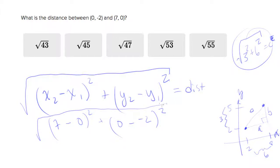and what you end up with is 49 plus 2 squared is 4. So you end up with root 53, which doesn't simplify, so that's your answer.